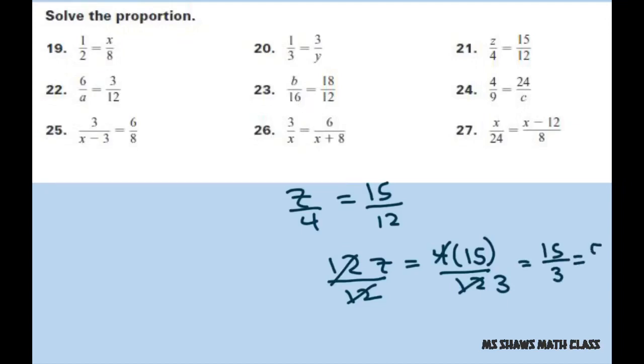Which is 5. Or you could have reduced that from the very beginning if you wanted to. If you'd have done that, you'd have divided both the numerator and the denominator by 3, you would have got 5 divided by 4, and that would have given you z equals 5.